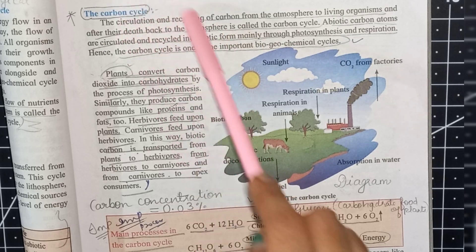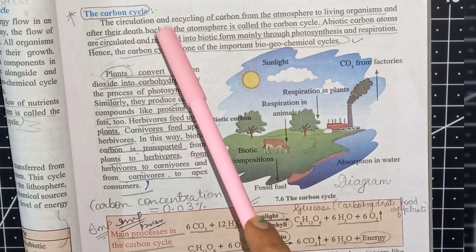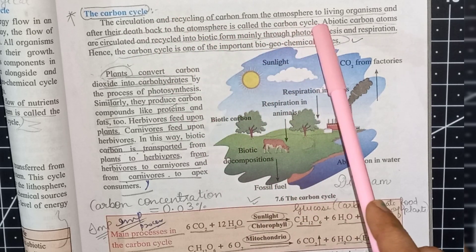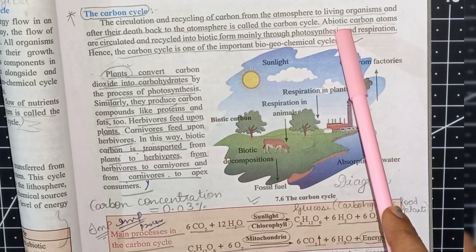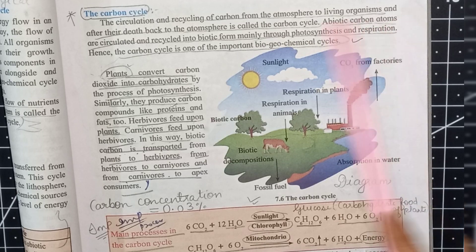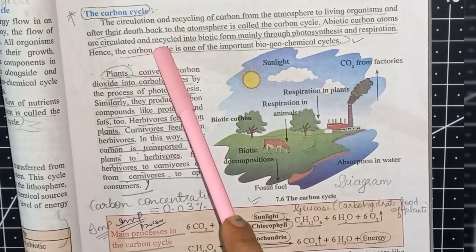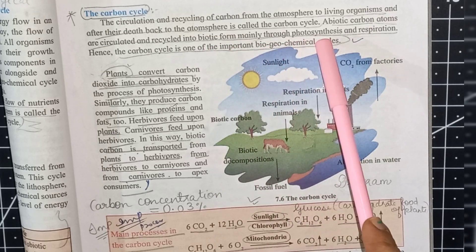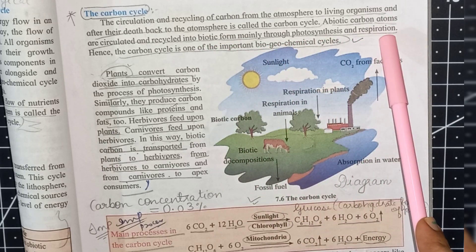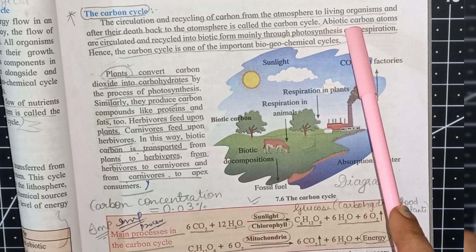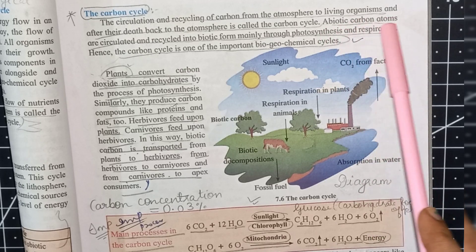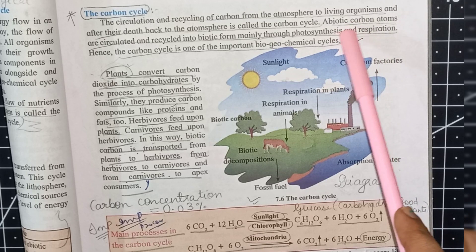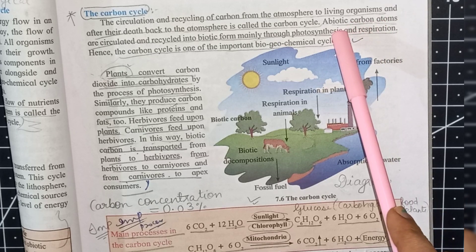Carbon is circulated and recycled into biotic form mainly through photosynthesis and respiration. Abiotic carbon atoms — long-living carbon atoms — exist in gaseous form, in nitrogen, air, and water.